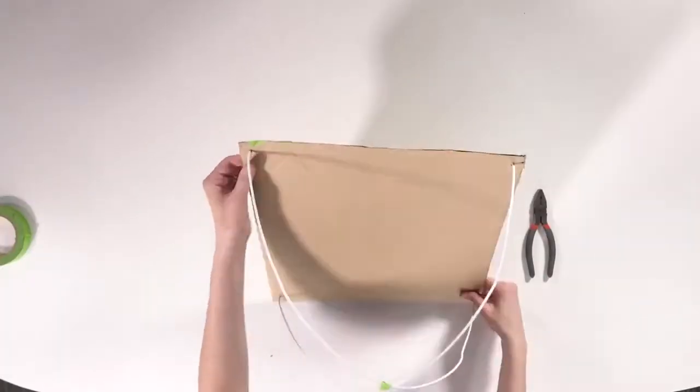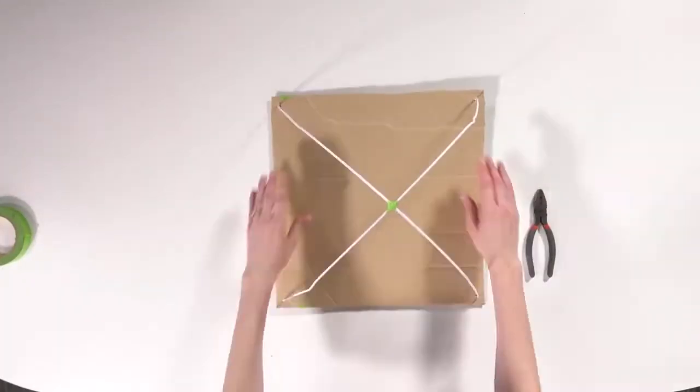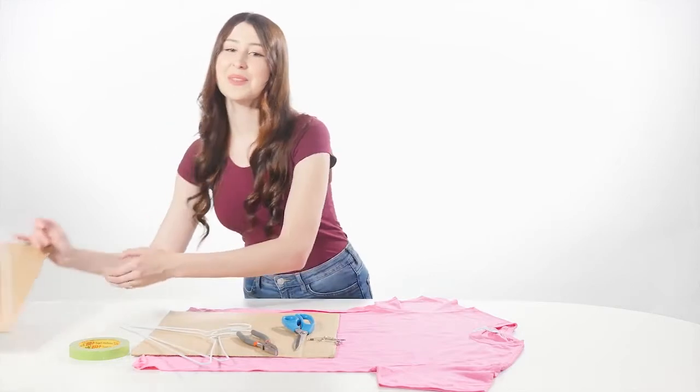Repeat the process with the other hanger on the two remaining corners and you'll have a tent frame that looks something like this.